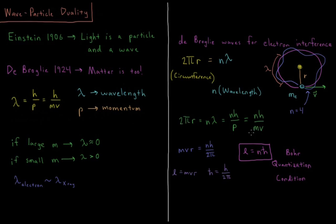If we multiply both sides by m and divide both sides by 2π, we get mvr equals nh over 2π. Notice that mvr is equal to the angular momentum in perfect circular motion. And h over 2π is equal to h-bar. This gives us L equals n h-bar.